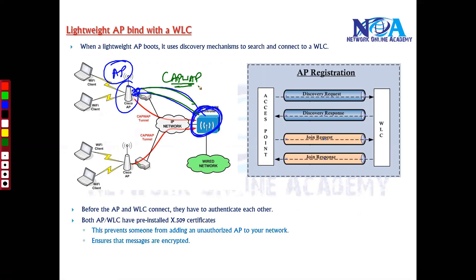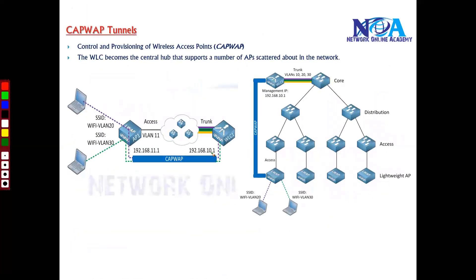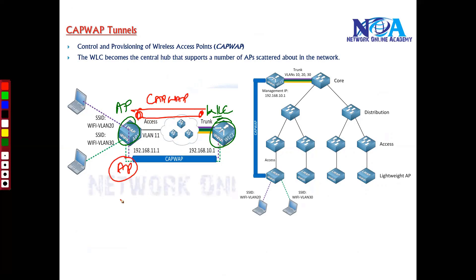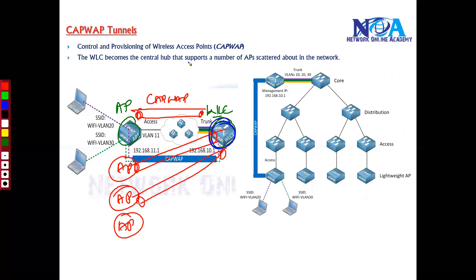CAPWAP tunnels are responsible for encapsulating user traffic as it moves through the network. Every access point builds a CAPWAP tunnel where the actual traffic is encapsulated. Once the access point discovers the WLC and finishes the authentication process, it builds the CAPWAP tunnel. When you have multiple access points, all of them build their own CAPWAP tunnels, making the WLC the central hub supporting all of them.